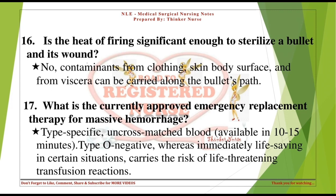What is the currently approved emergency replacement therapy for massive hemorrhage? Type-specific, uncross-matched blood, available in 10 to 15 minutes. Type O-negative, whereas immediately life-saving in certain situations, carries the risk of life-threatening transfusion reactions.